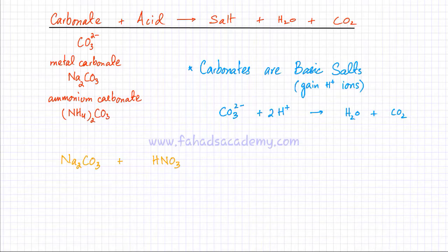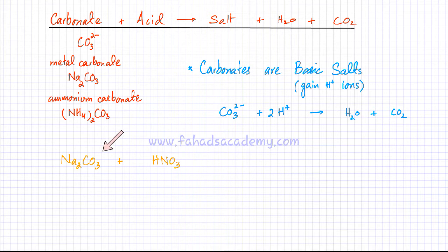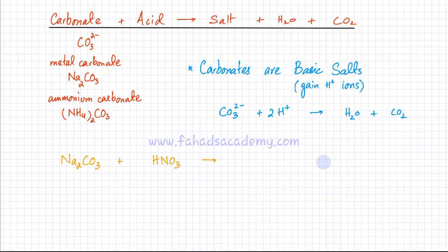Now I'm going to make an equation. Carbonate plus acid produces salt, water, and carbon dioxide. I have sodium carbonate, Na₂CO₃, reacting with nitric acid, HNO₃. It's going to produce a salt, water, and carbon dioxide. Water and carbon dioxide would always be produced, so let's write those down first.